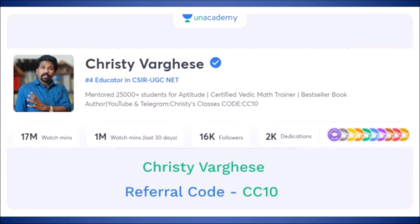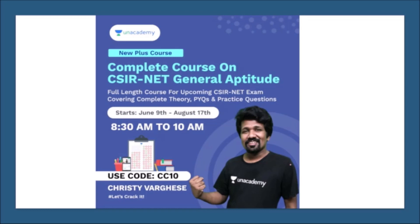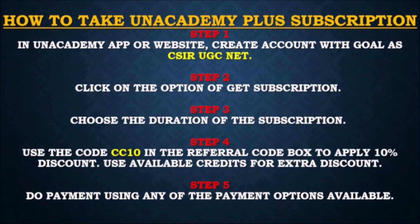If you want live free classes for General Aptitude you can download Unacademy mobile application and search the profile Christy Varghese. You can see 300 plus pre-recorded videos and upcoming daily live classes happen at 11 AM Monday to Friday. More YouTube video details are given here, and these are the details of the full courses or paid courses on the Unacademy platform which you can get by taking Unacademy Plus subscription with the referral code CC10. Hope to see you in the upcoming video. Thank you.